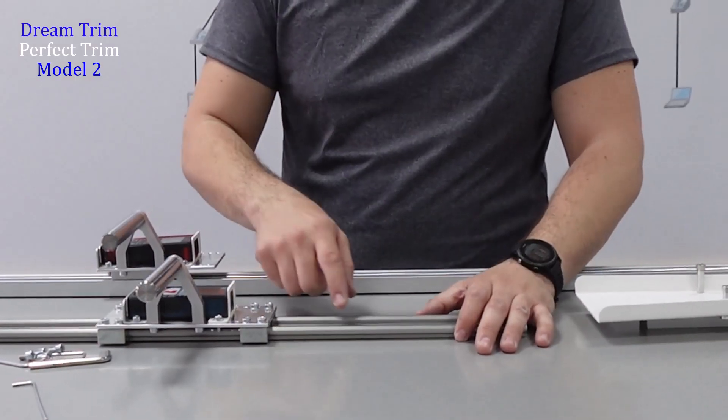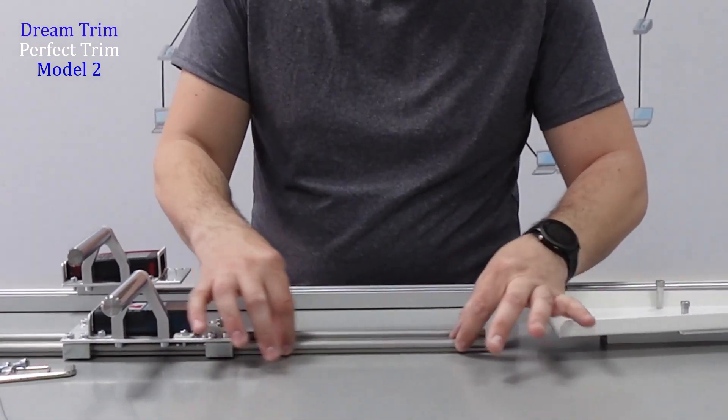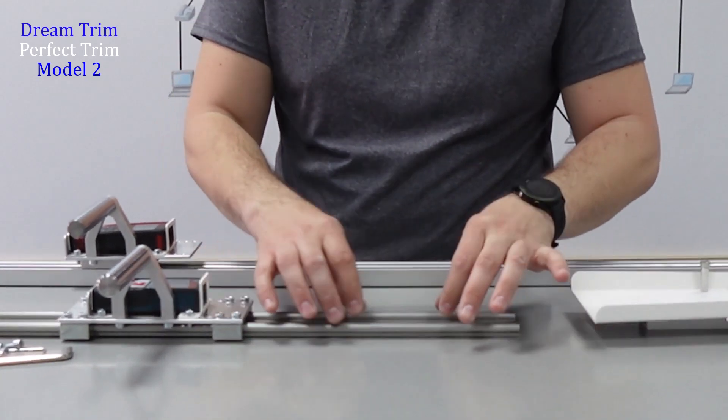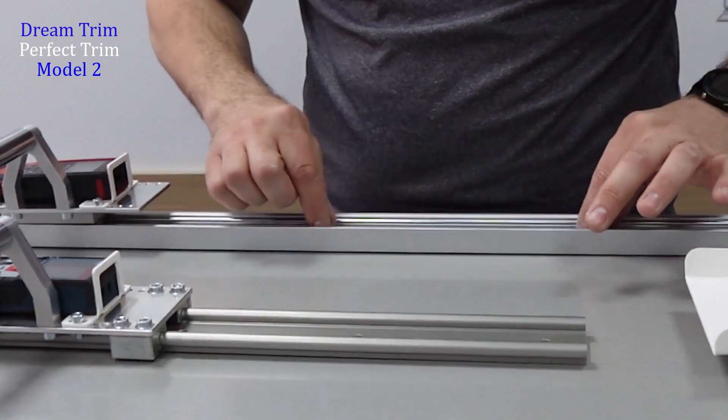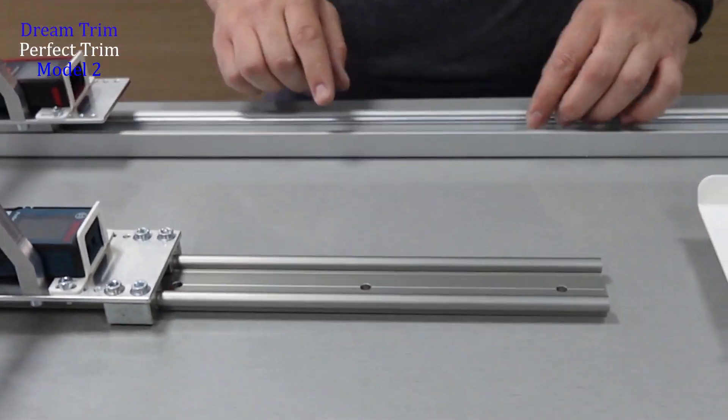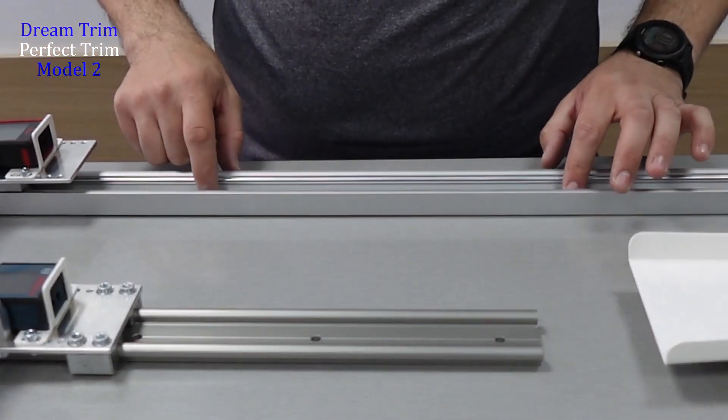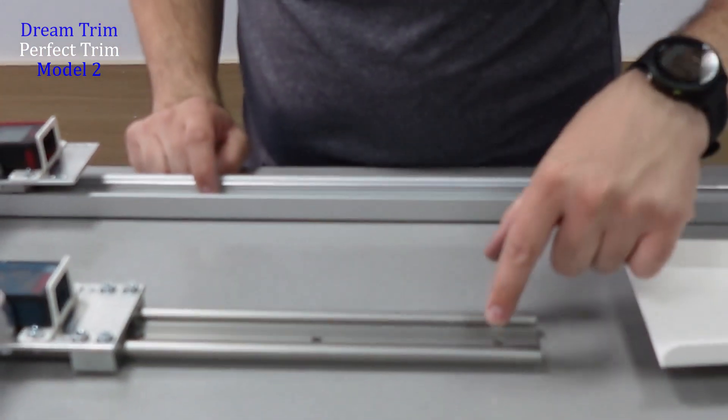So this is the guide, a cheaper guide that I use for the Model 2, comparing to this rail guide that I use for Model 1. So this is actually for Model 3.